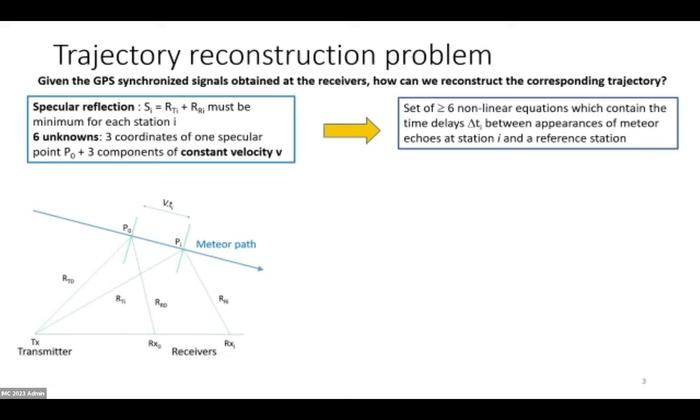That means that if you have two receivers at different locations, you'll have two different reflection points. As a result, on the ground you will detect your meteor echoes with certain time delays, and you can actually use those time delays to try to retrieve your meteorite trajectory and speed. We use this specular reflection condition and introduce six unknowns that characterize our trajectory: three for the position and three for the velocity, which is assumed to be constant.